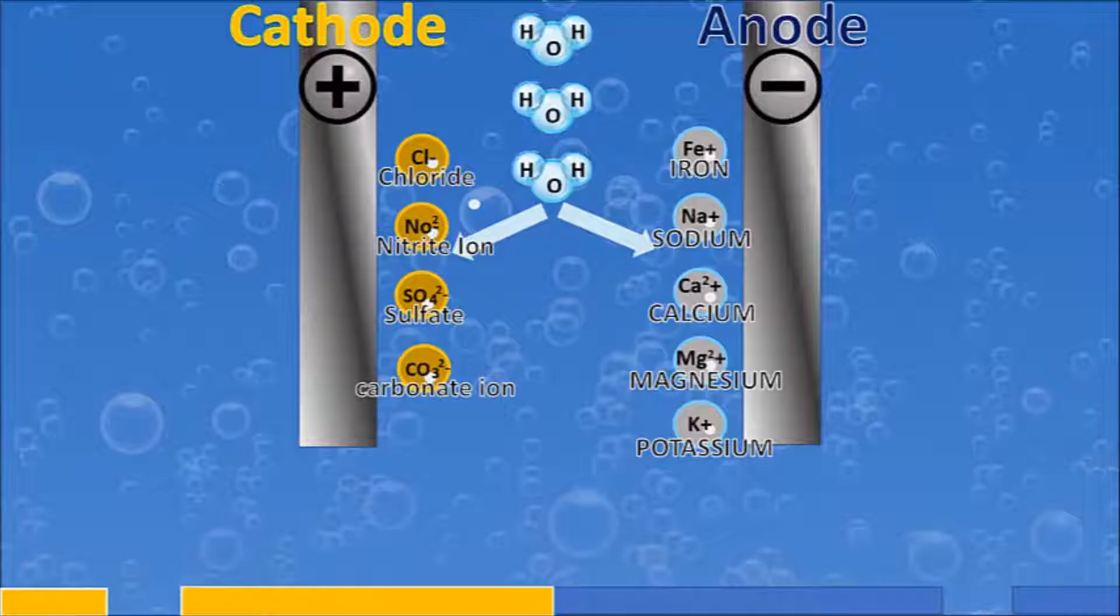So the ones on the right—iron, sodium, calcium, magnesium, potassium—these are your electrolyte minerals. These are the minerals that you need for health and well-being, so your body's not actually being voided of them like with reverse osmosis water or distilled water. So as the water gets charged, this is what happens.